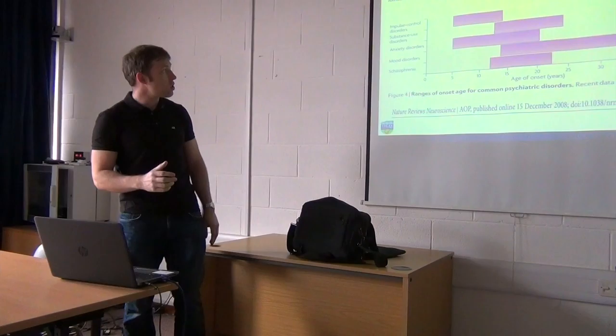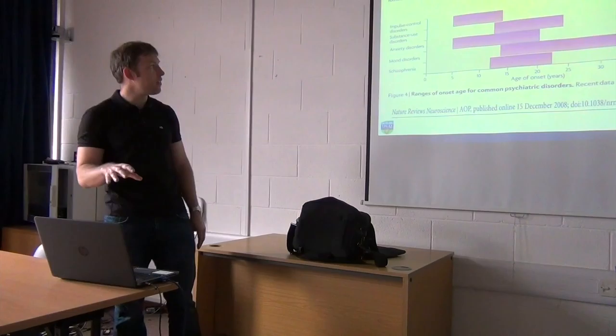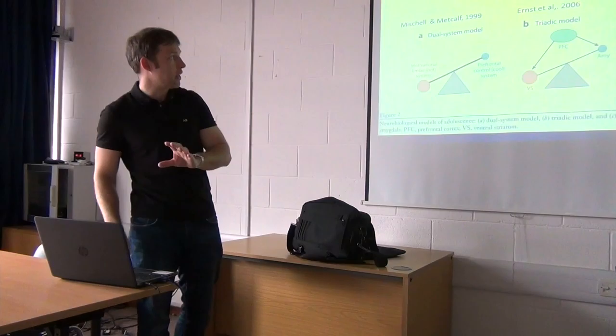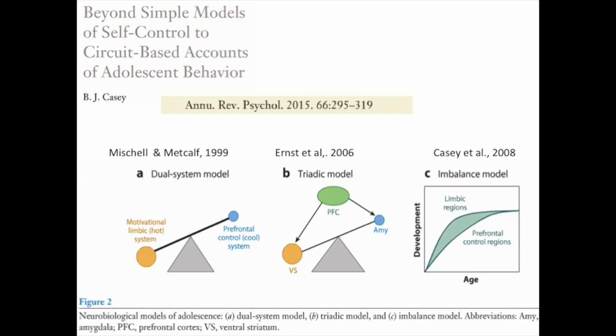Some people have associated this non-uniform pruning with a variety of disorders that tend to arise during adolescence. Things like ADHD tend to start slightly earlier in development, but substance use disorders, mood disorders, and schizophrenia tend to take off during the adolescent years. There's quite a lot of literature linking the adolescent brain and its changes to impulse control disorders and substance use specifically. Most of these frameworks work off so-called hot/cold models.